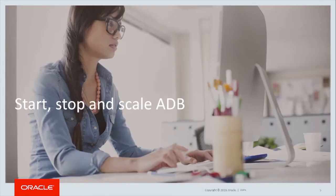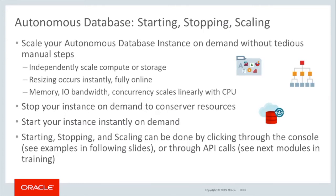Let's see how to start, stop, and scale an autonomous database. The autonomous database instance can be scaled on demand without tedious manual steps. Autonomous Database allows for independently scaling of compute or storage. Resizing occurs instantly, fully online — memory, I/O bandwidth, and concurrency scale linearly with CPU. So when CPUs are scaled, the system automatically adjusts other resources to match.